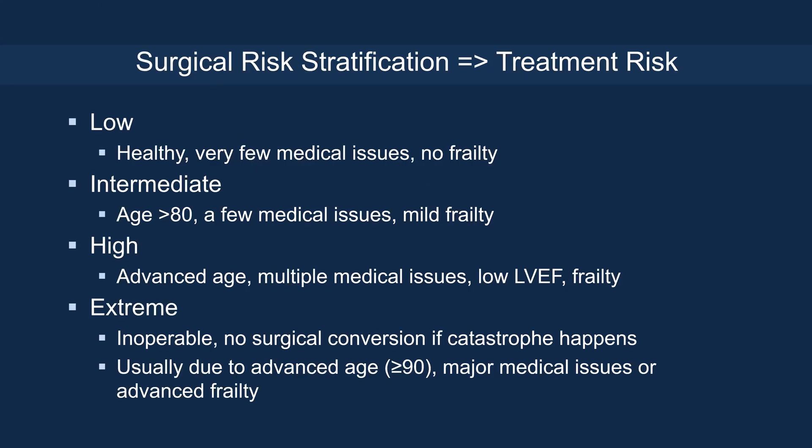How do you categorize surgical risk? In low-risk patients, they're typically healthy with few medical issues and no frailty. In intermediate-risk patients, typically age over 80 with few medical issues and maybe mild frailty. High surgical risk patients are typically older or have multiple medical issues, low ejection fraction, no frailty. And finally, extreme-risk patients are typically inoperable with no surgical conversion if there's a catastrophe — usually because they are very old, have major medical issues, advanced frailty, or unfavorable anatomy for surgery.